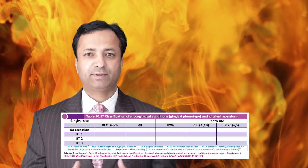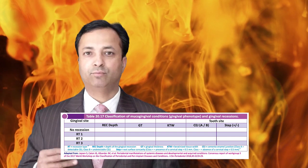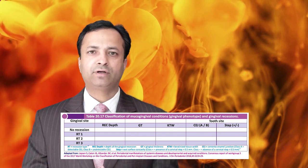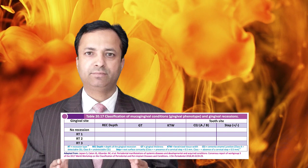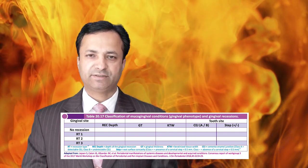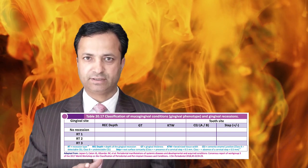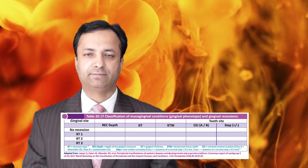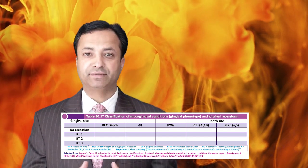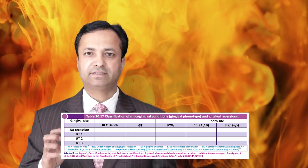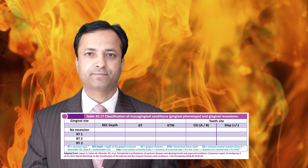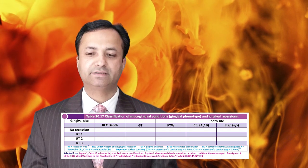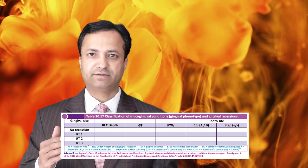The second parameter is gingival thickness. Three gingival phenotypes have been described: thin scalloped, thick scalloped, and thick flat. Notably, the term gingival biotype has been replaced with gingival phenotype, because phenotype includes both the genetic aspects of tissue and environmental factors. The third parameter is keratinized tissue width, which plays a very important role in muco-gingival deformities. The fourth parameter is the cementoenamel junction — whether it is clinically detectable — and the fifth parameter is whether a step at the cementoenamel junction is present or not.